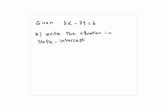Given 2x minus 3y equals 6, the first part was to write the equation in slope-intercept form.